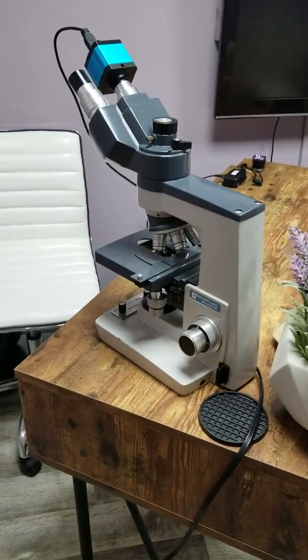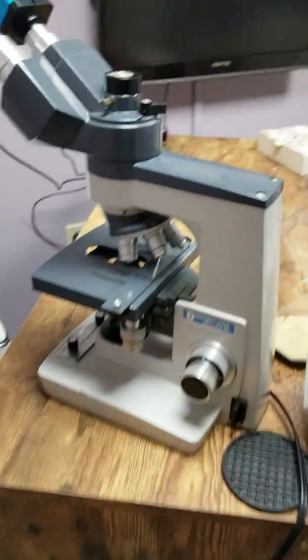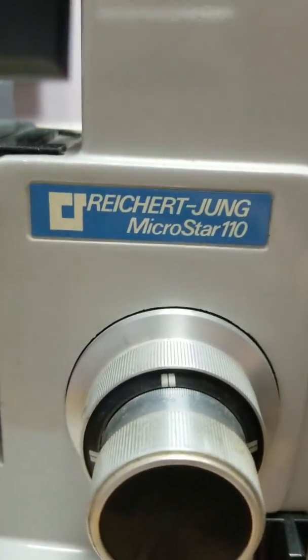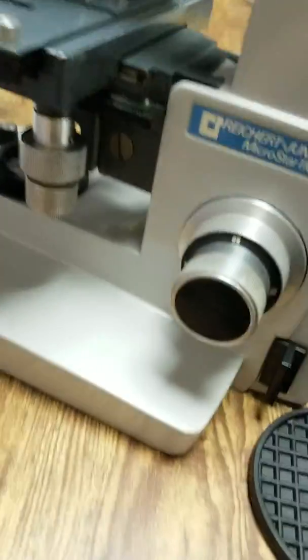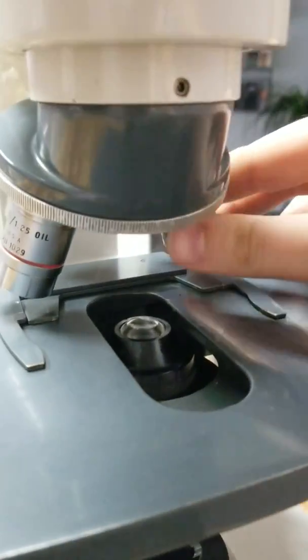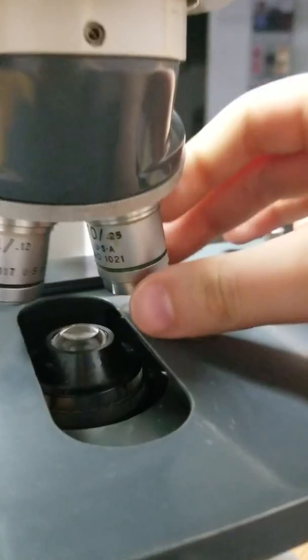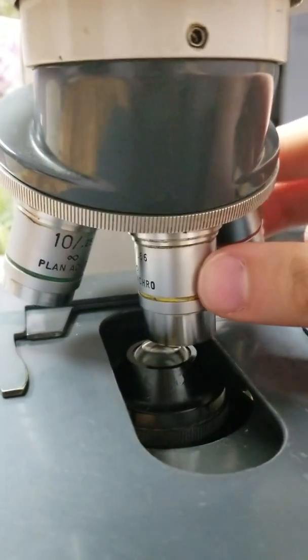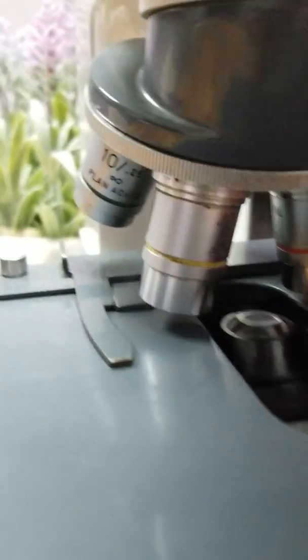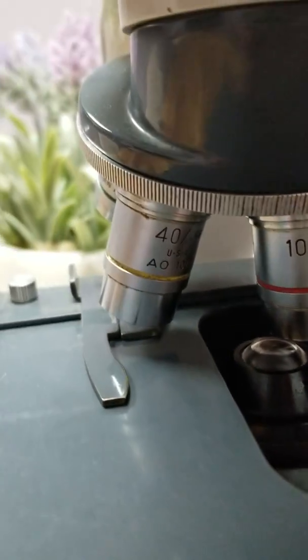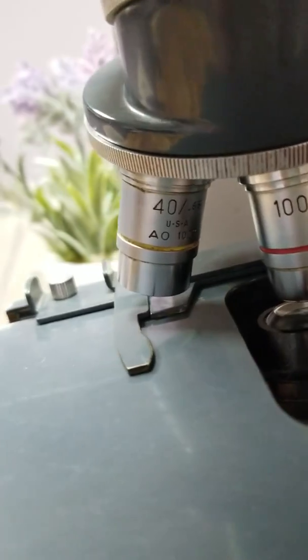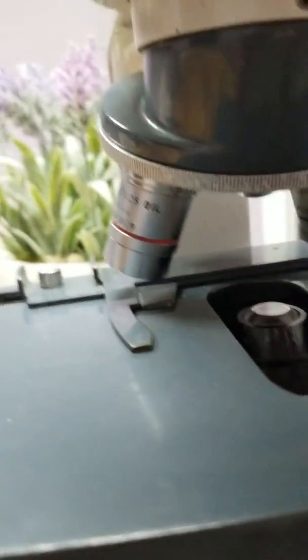So this is my live blood analysis setup. I have just a regular microscope, a regular light-field microscope. It's missing the last eyepiece, but it has the regular lenses on it. The 40 and the 100 oil. I usually just use the 40. It works perfectly for everything that I need.